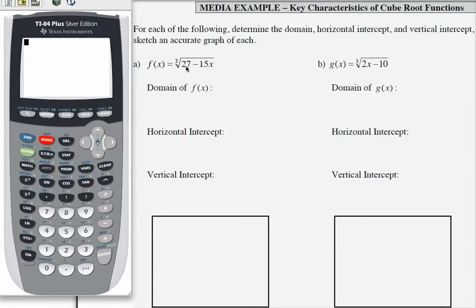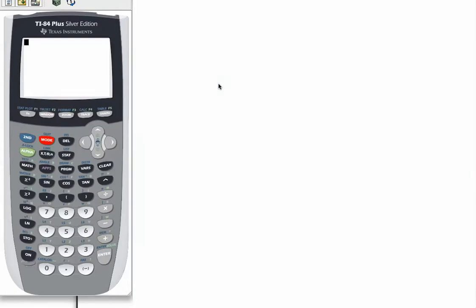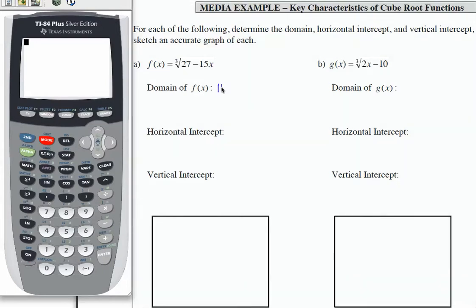f(x) in part a is a cube root function. When we have a cube root, then what's underneath the radical can be any real number, including negative numbers. So that means our domain for f(x) is going to be all real numbers.